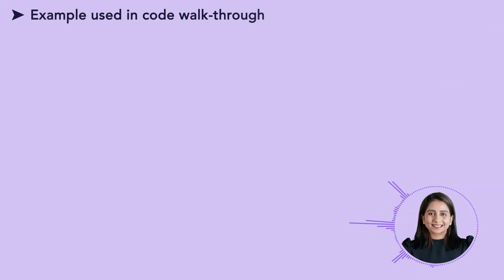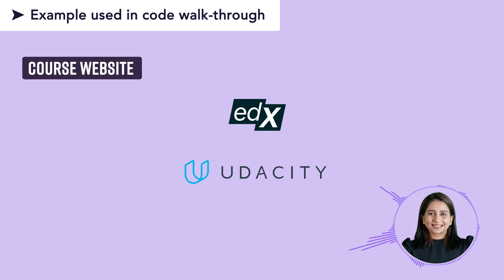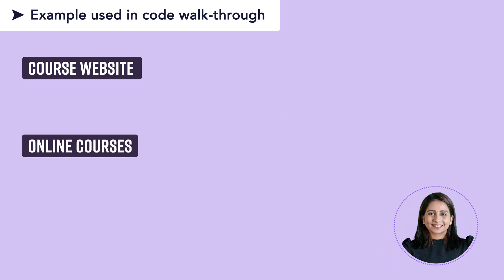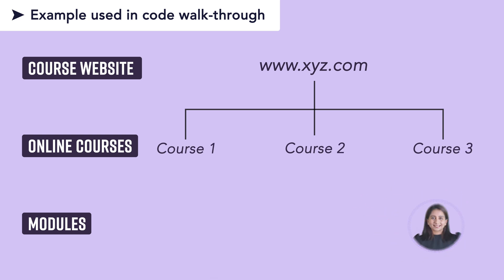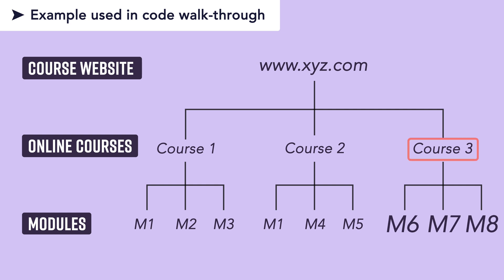Now we will move on to the code walkthrough. Before showing the class diagrams and actual code, I want to give you a brief idea of what problem we are building with this example. Let's say you have to build a course website just like edX or Udacity, where the website has multiple online courses and every course can have the same or different kinds of modules. So there is one website, it will have multiple courses, and every course will have different modules — M1, M2, M3 — though one course can have common modules with others, or none at all.